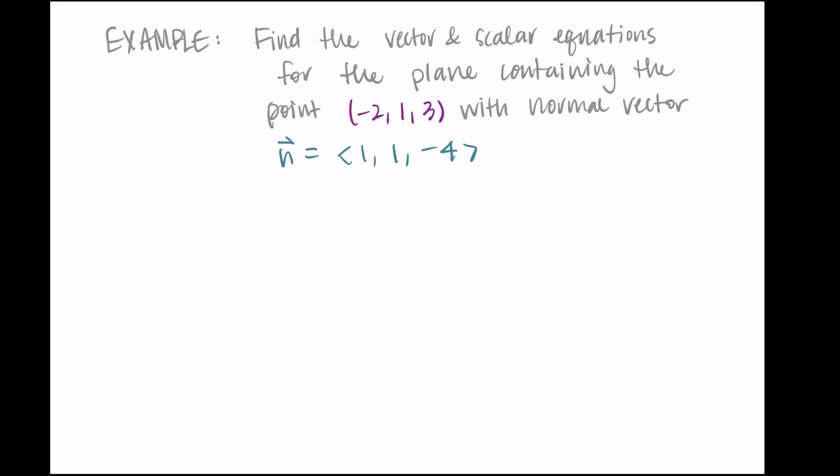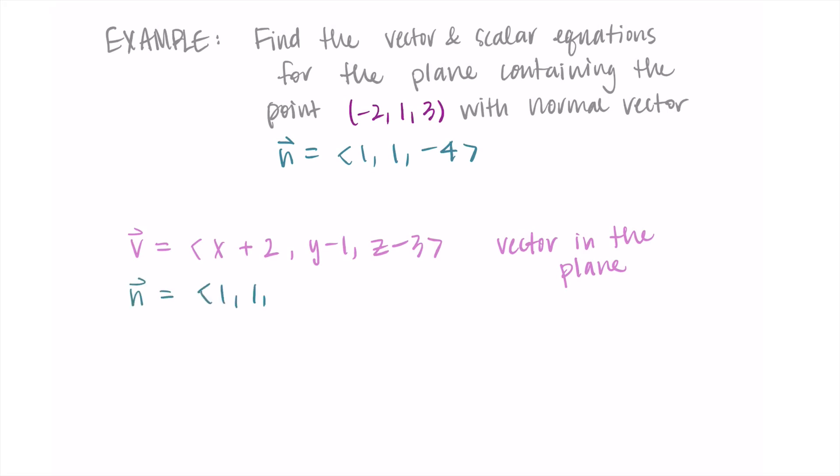Alright, so we have the normal vector, but we're going to need the vector that's in the plane that is based on the point we were given. So what we do is I do x minus the x component, so it's x minus a negative two, or x plus two. Then I do y minus the y component, y minus one, and then z minus the z component, so I have z minus three. And this is my vector in the plane that we're trying to find the equation for. And then I also have this vector n, that's 1, 1, negative 4. This is my normal vector that's orthogonal to the plane, and I was given this at the beginning of the problem. So we know that orthogonal vectors have a dot product of zero, and since we have a vector in the plane and a vector orthogonal to the plane, we know that n dot v is going to be equal to zero.